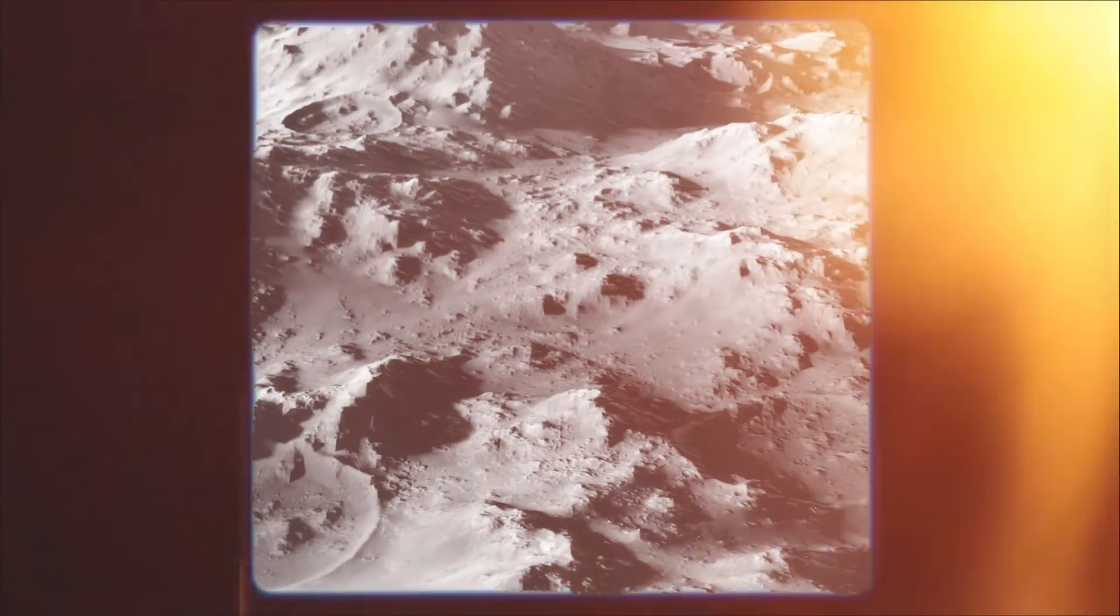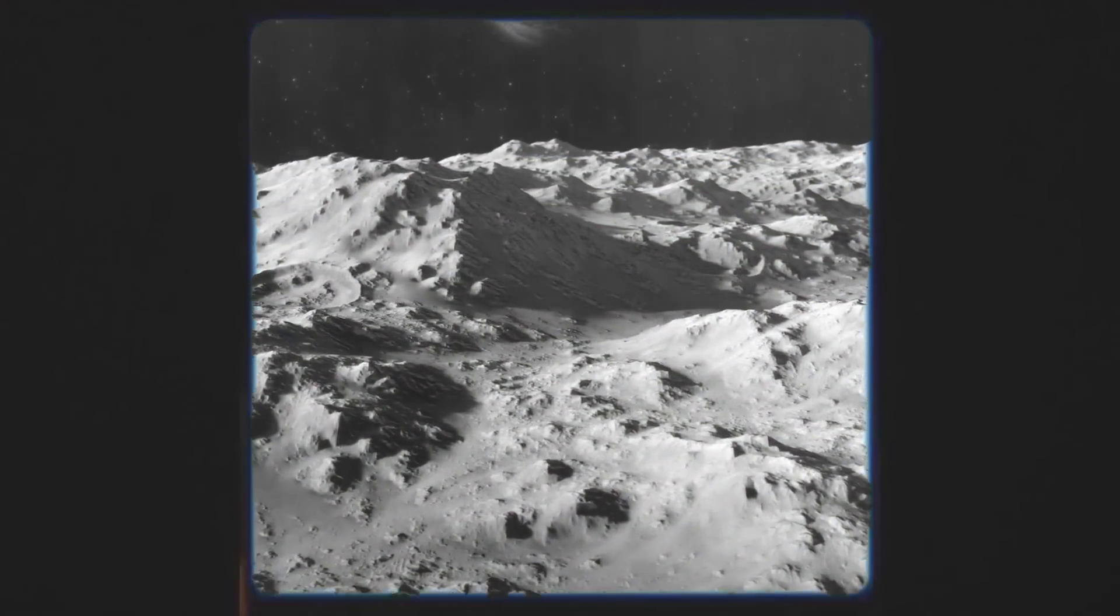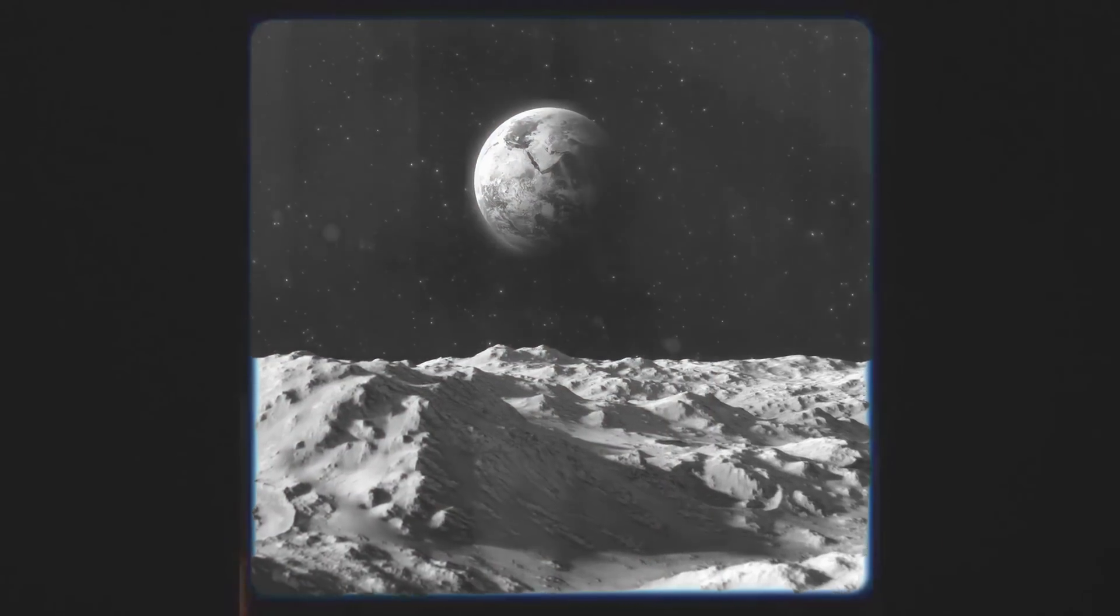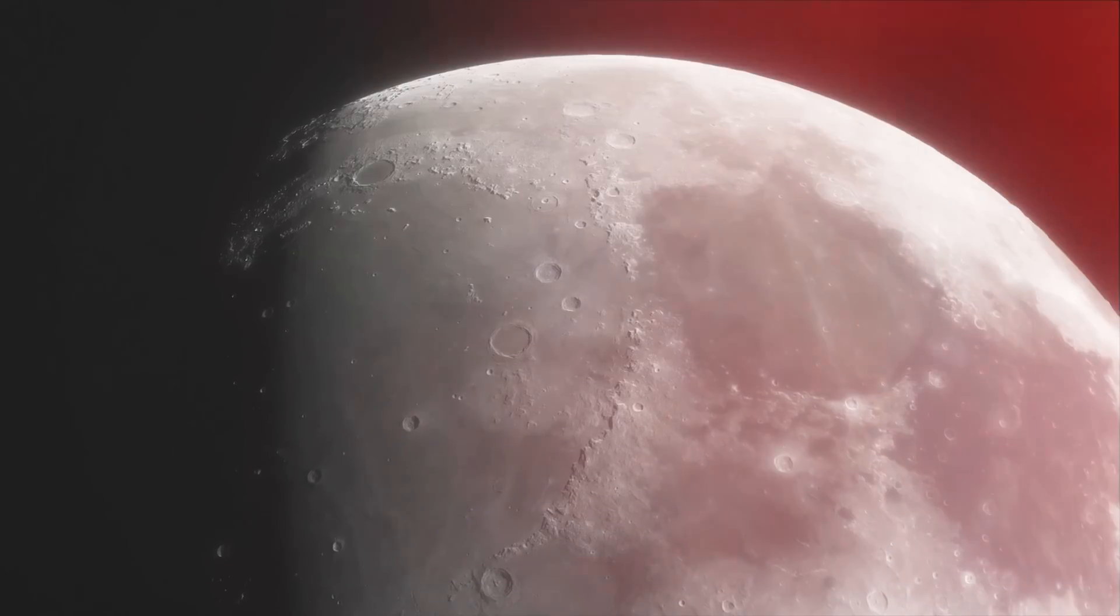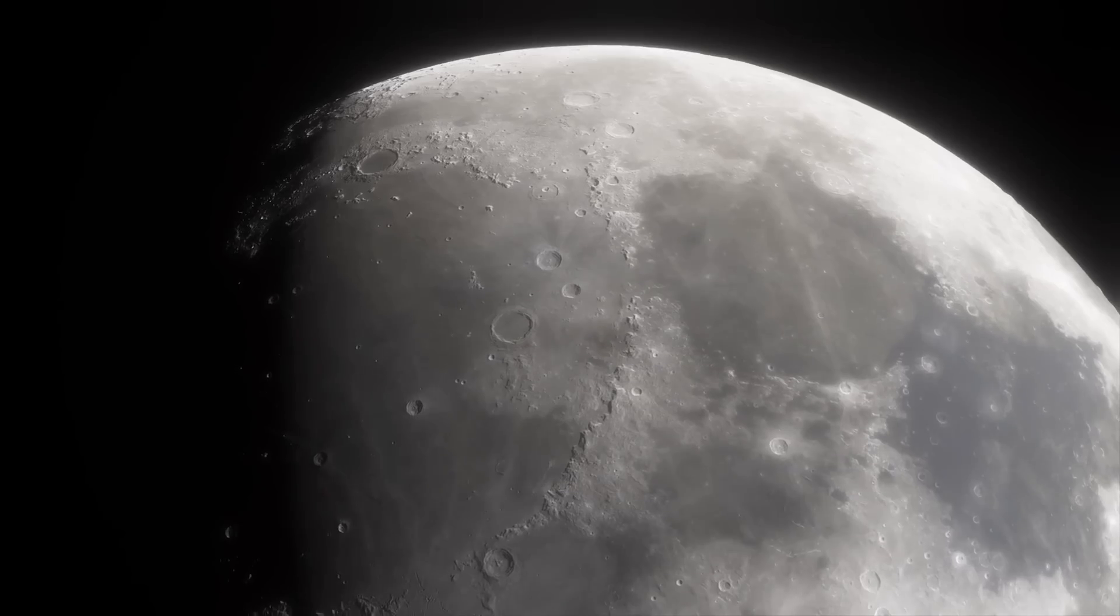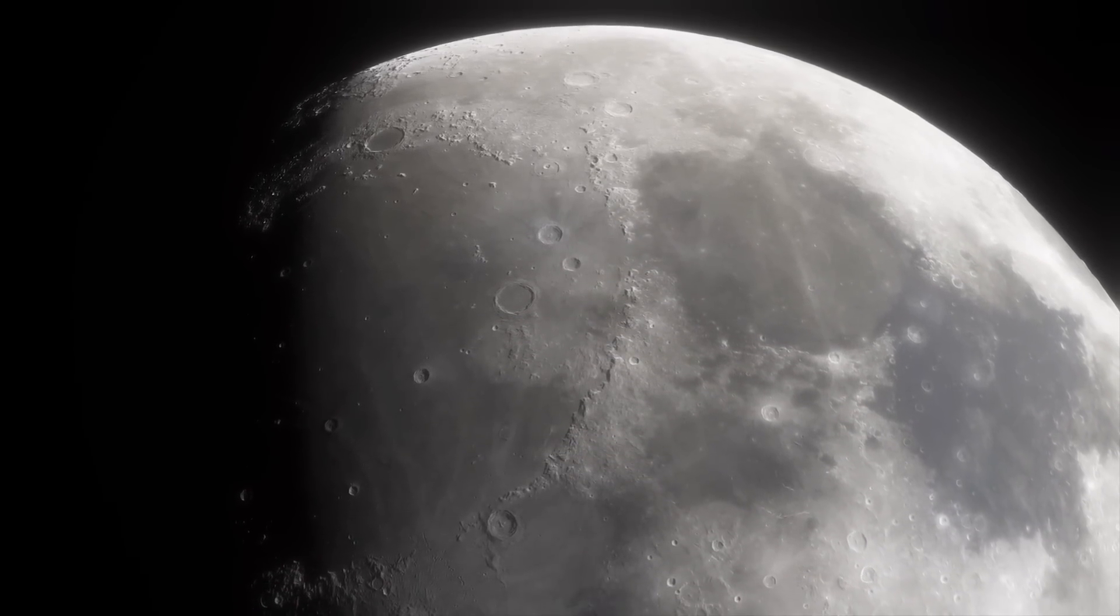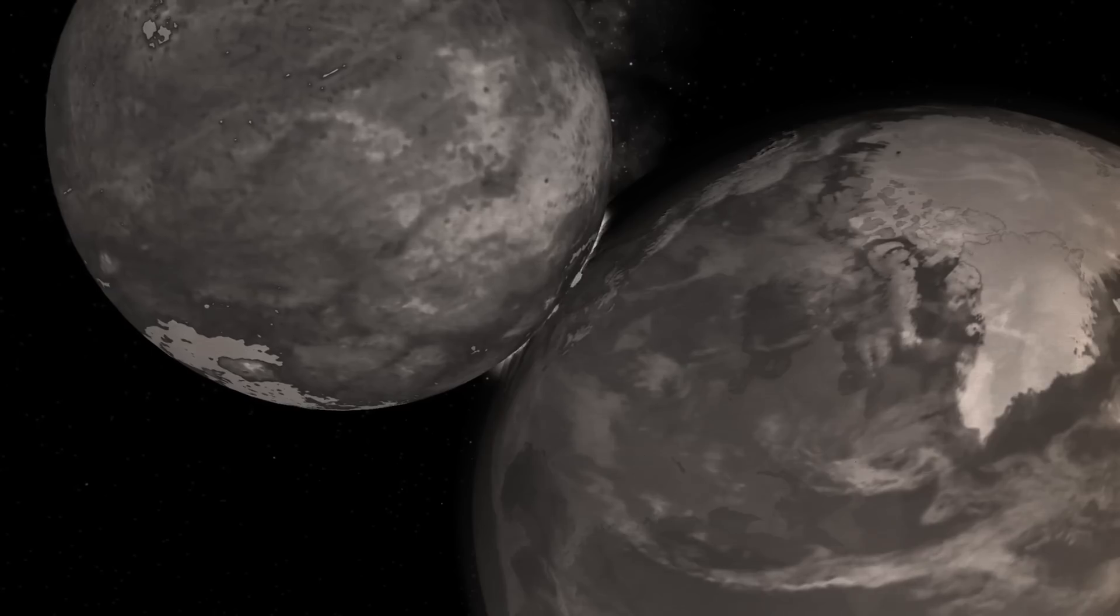For many years, it was believed that when Theia crashed with the young Earth, the moon was formed with the resultant debris, which was primarily from Theia itself. This suggests that the moon is made up of a large chunk of ancient Earth, which could have been knocked off our pale blue dot by a large impact.